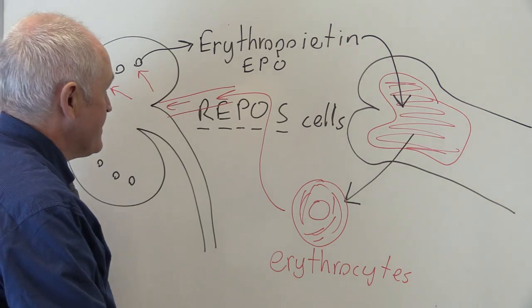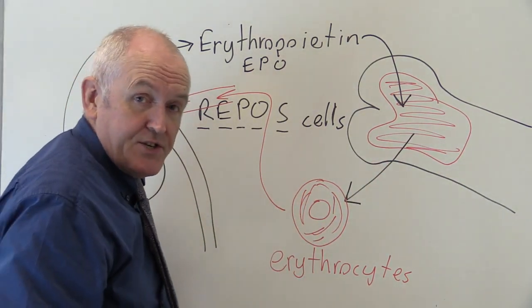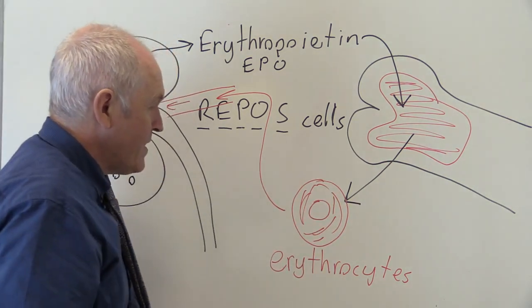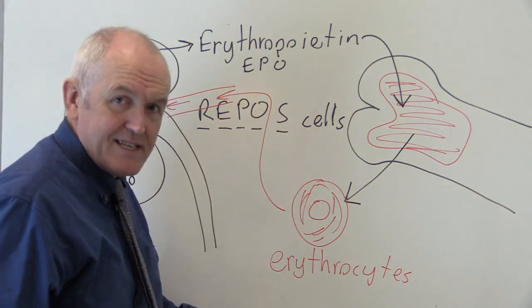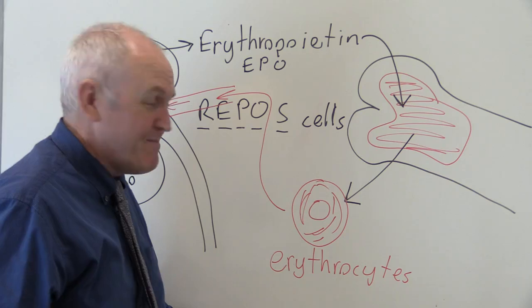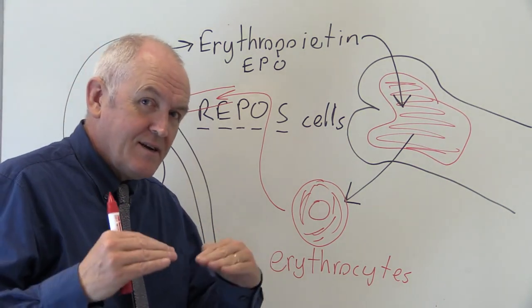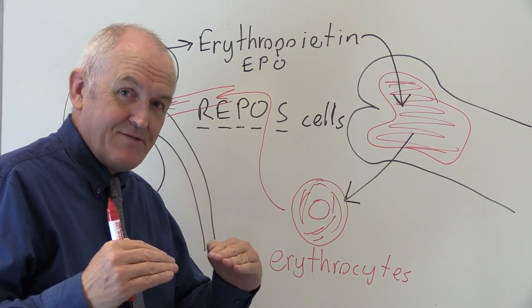If you reduce the amount of erythropoietin, that's going to reduce the stimulation of erythropoiesis, so less cells will be produced. So the body, via this erythropoietin, erythropoiesis, erythrocyte mechanism, is constantly adjusting the red cell mass so we have just the right hematocrit.